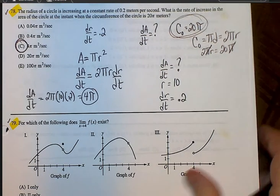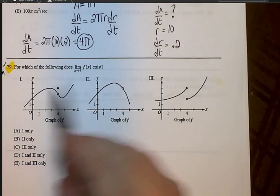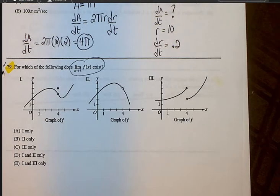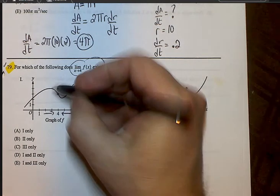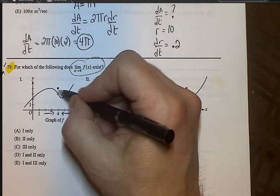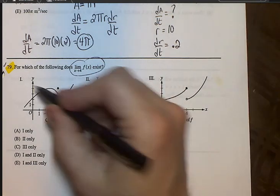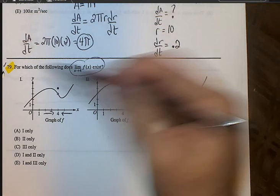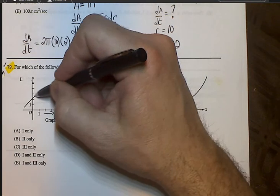Question 79, again, doesn't really require a calculator. You have three graphs. It says, for which of the following does the limit as x approach 4 exist? That means as you're approaching 4 from the left side and the right side, you're going to squeeze and approach the same number on the y axis. When you look at number 1 here, or letter I, you are coming into 4, so we're approaching this number over here.